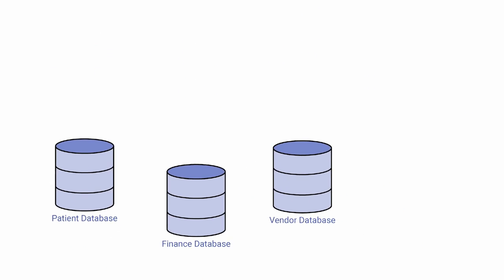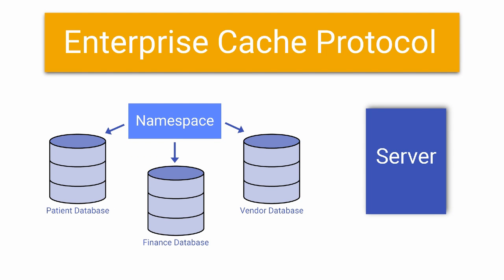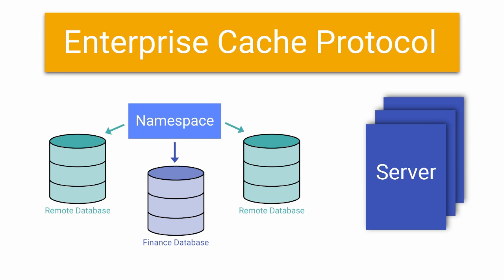Additionally, Cache implements a protocol called ECP, Enterprise Cache Protocol, that allows namespaces to reference databases residing on remote servers. This allows for additional scalability by spreading out the work of retrieving data and running application code across multiple sets of hardware.